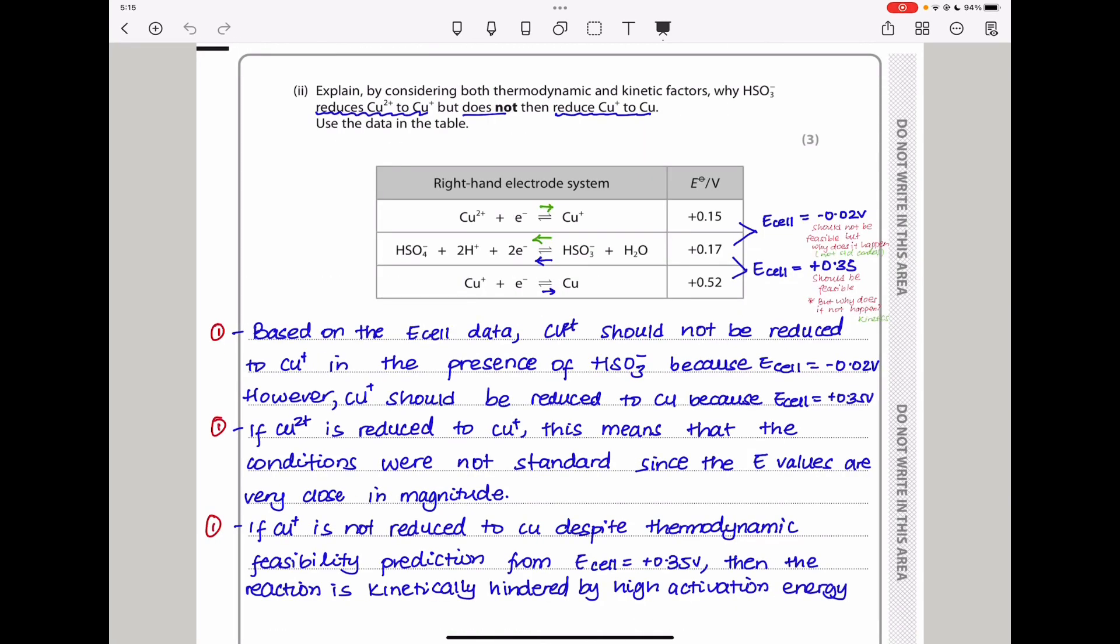Explain by considering both thermodynamic and kinetic factors why the hydrogen sulfate reduces copper(II) to copper(I) but does not then reduce copper(I) to copper. Based on the information, copper(II) is reduced to copper(I), so the hydrogen sulfate reaction goes to the other direction. When we consider the electrode potentials, the E cell is negative 0.02 volts. Because this is negative, that reaction should not be feasible. However, the reaction did happen, so it was not carried out at standard conditions, meaning they could have used a higher concentration of copper(II).